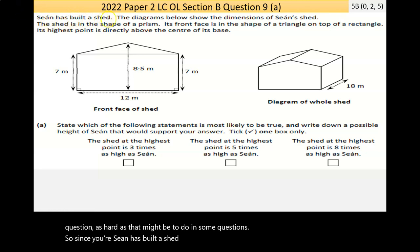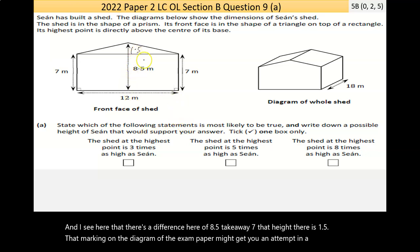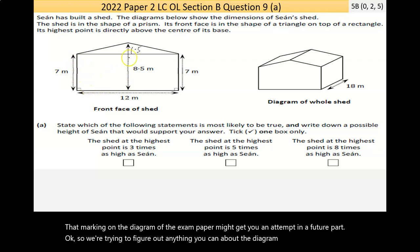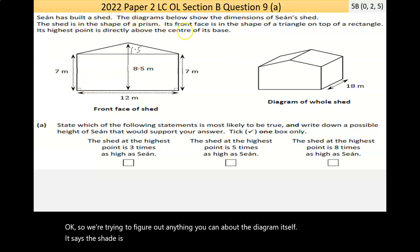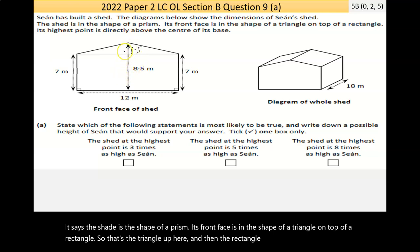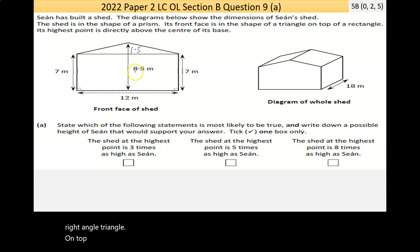Question nine is looking like geometry or maybe trigonometry. It's important to remember that any topic can come up in any question. It says here that Sean has built a shed. The diagrams below show the dimensions of Sean's shed. It's 8.5 meters high in the middle, the walls are 7 meters high, and it's 12 meters wide. There's a second diagram showing it's 18 meters in length. I see two shapes: a rectangle and a triangle. The difference between 8.5 and 7 gives a height of 1.5 meters.